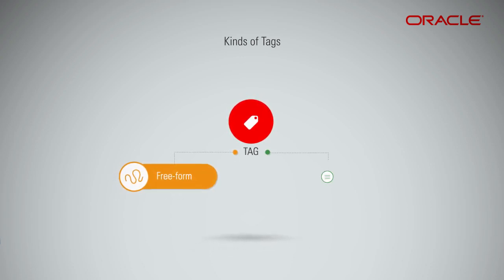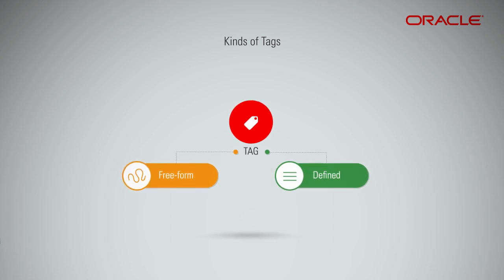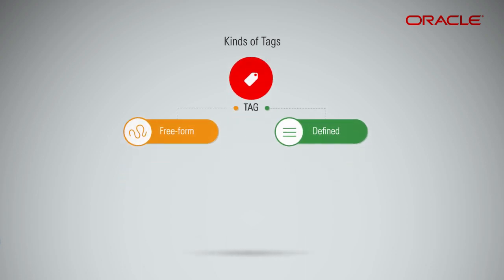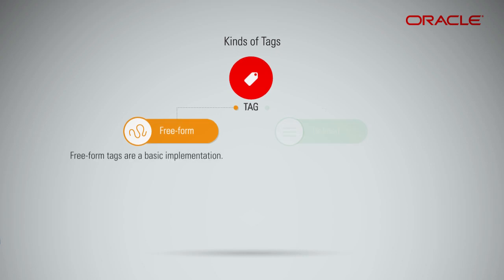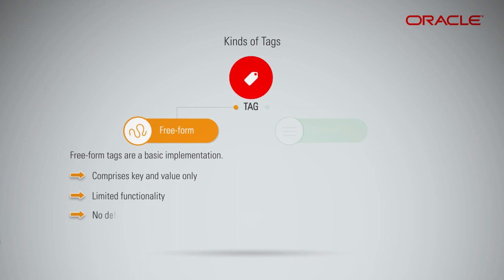We also support defined tags where the key and value have a schema. Freeform tags have limited functionality — they do not have any constraints or defined schema. Anyone who has access to a resource can use freeform tags. You can filter lists on freeform tags, but you cannot use freeform tags for policy or access control.